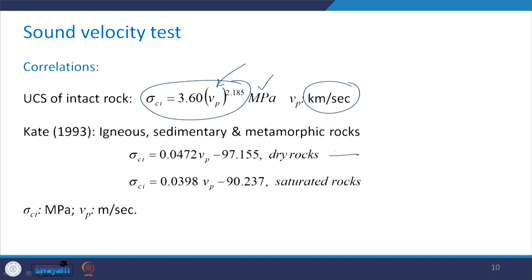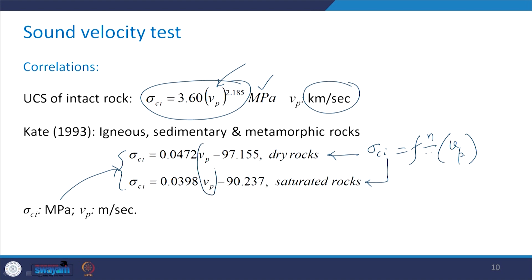For dry rocks, it is one expression and for saturated rocks it is another — sigma ci is a function of velocity of the P wave in both cases. The units for sigma ci are megapascal and for the velocities, units are meter per second. One needs to be very careful about units while using empirical correlations obtained from regression analysis of experimental data.